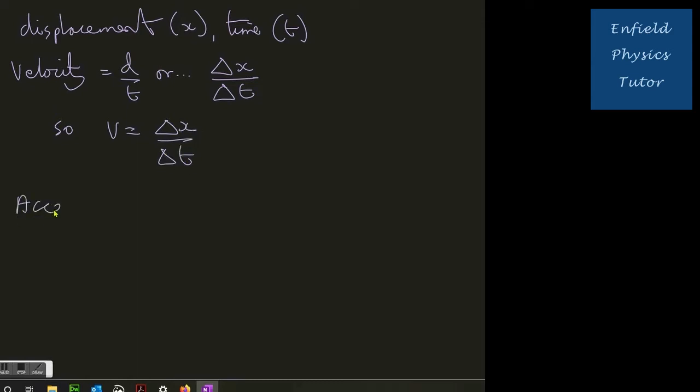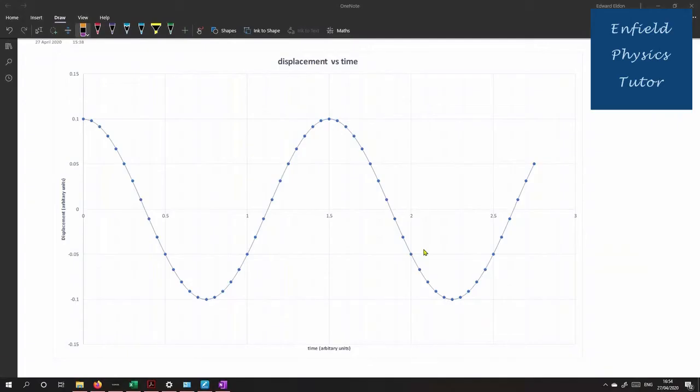Now in a similar fashion acceleration is the change of velocity delta v over the time taken for that change to happen, delta t. So we have two delta equations here and both of these are effectively gradients. So the gradient of the displacement curve gives us the velocity.